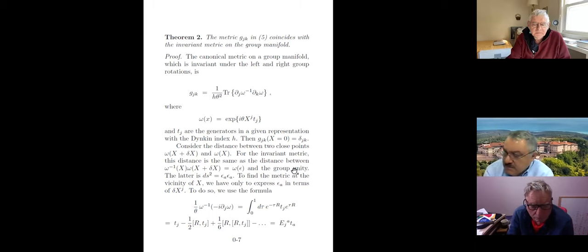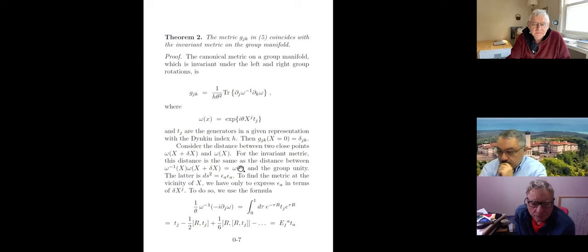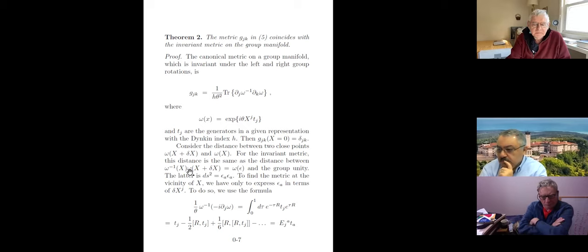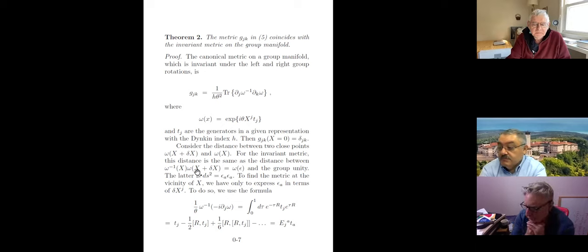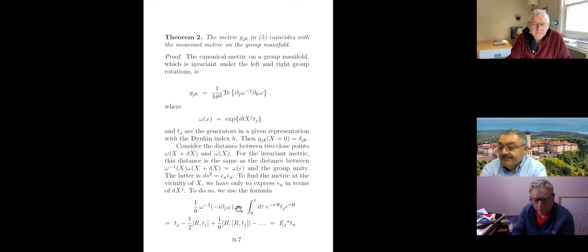The only task is to relate the shift δx to the small parameter ε. One finds ω(x + δx) = ω(x) plus the derivative of ω multiplied by δx, and using the Baker-Campbell-Hausdorff formula one derives that this is the same vielbein.